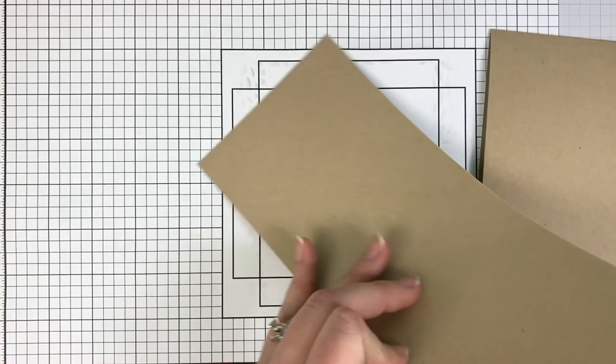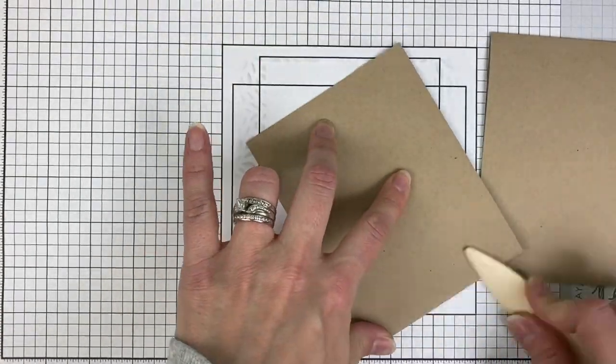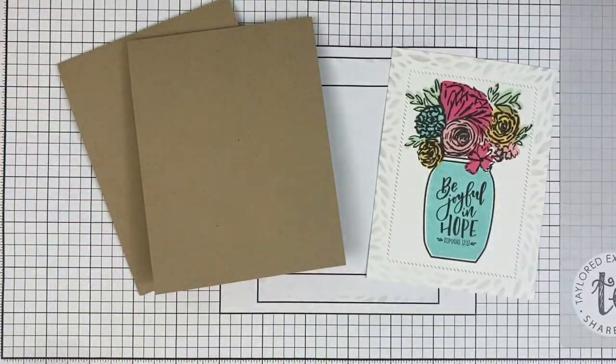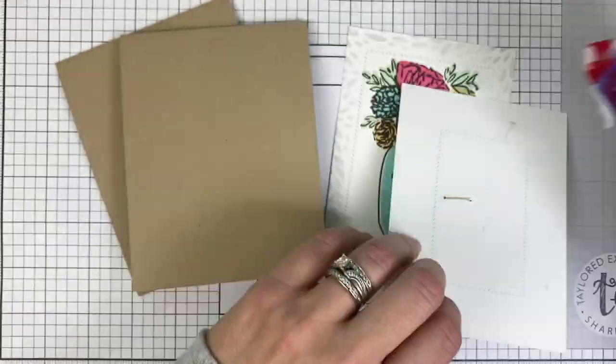I'm going to mount each of them onto a Toffee card base, so I'm folding those in half with my bone folder and adhering them with my Scotch tape runner.